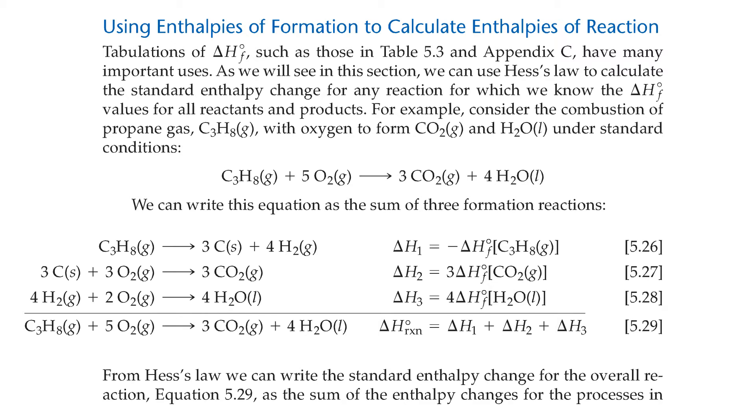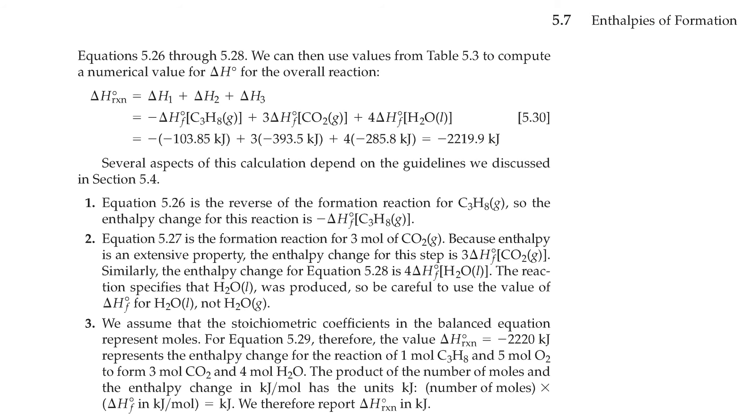From Hess's law, we can write the standard enthalpy change for the overall reaction, equation 5.29 as the sum of the enthalpy changes for the processes in equations 5.26 through 28. We can then use the values from table 5.3 to compute the numerical value for delta H0 for the overall reaction. All the different delta H's added up forms negative 2219.9 kilojoules.